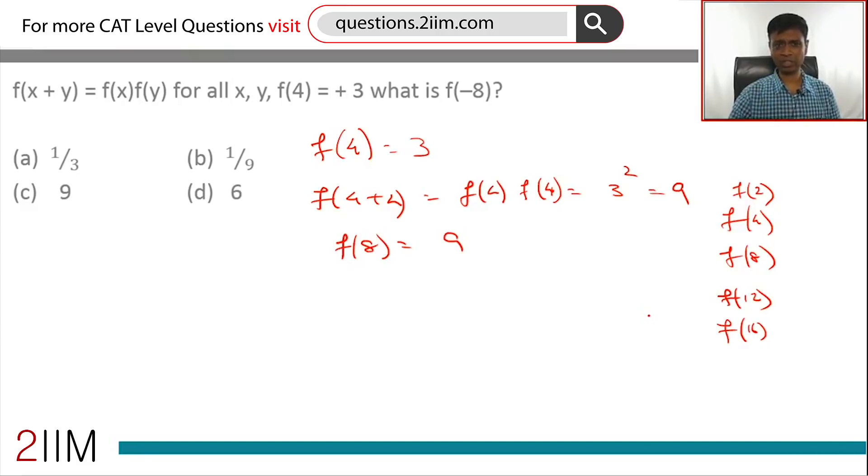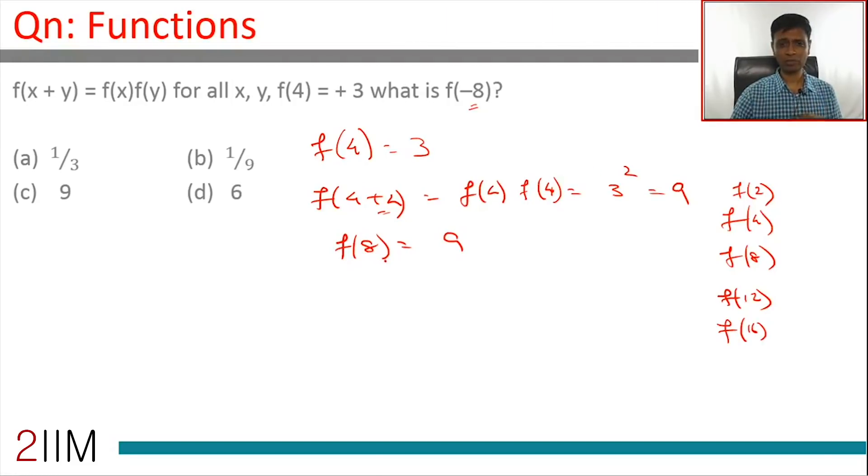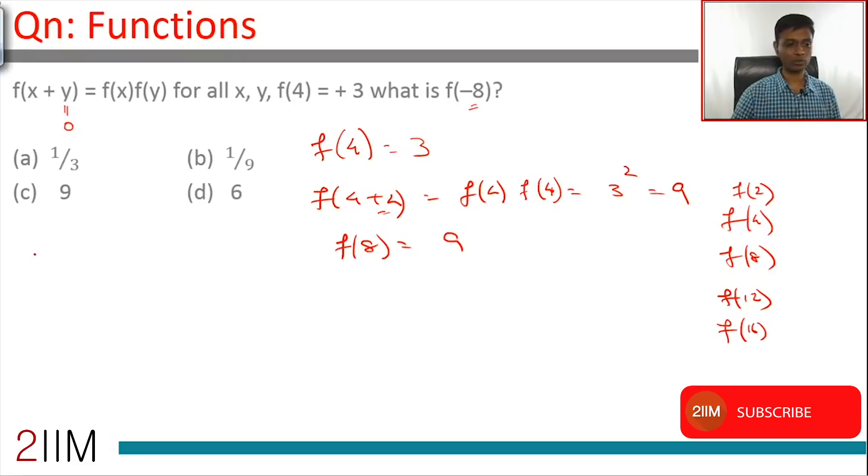Somewhere we have to find f of minus 8. We need to add a minus 8 here to take us somewhere. Maybe we can do f of 8 minus 8. But before all that, the really big breakthrough here could come if we substituted y as 0.